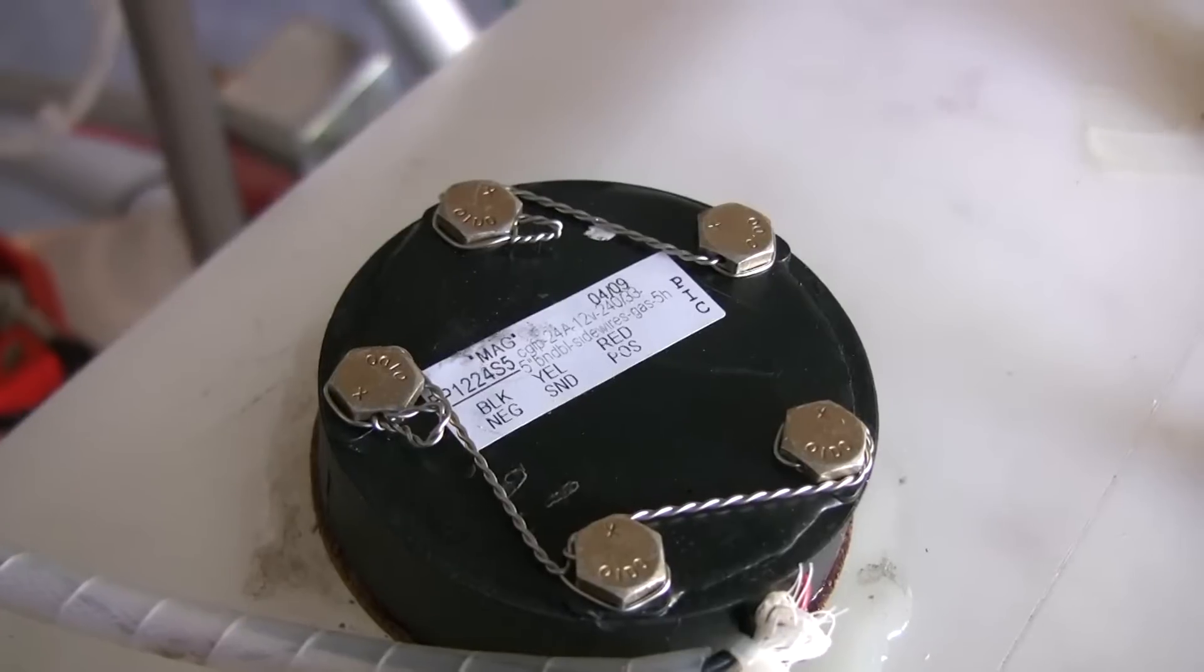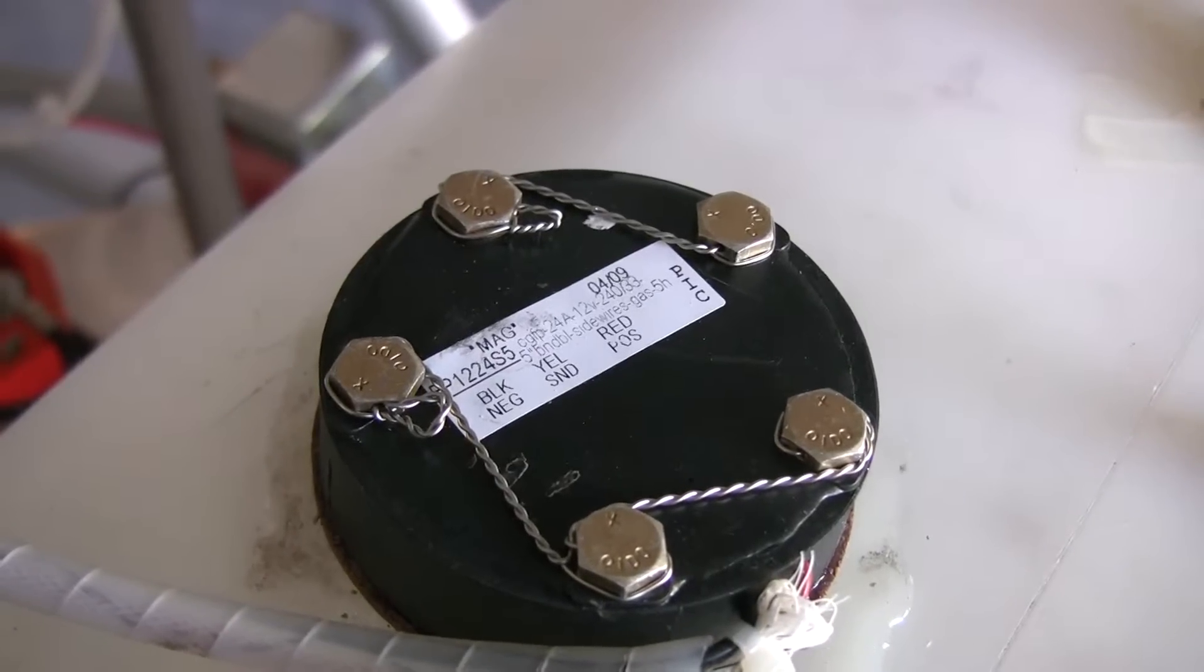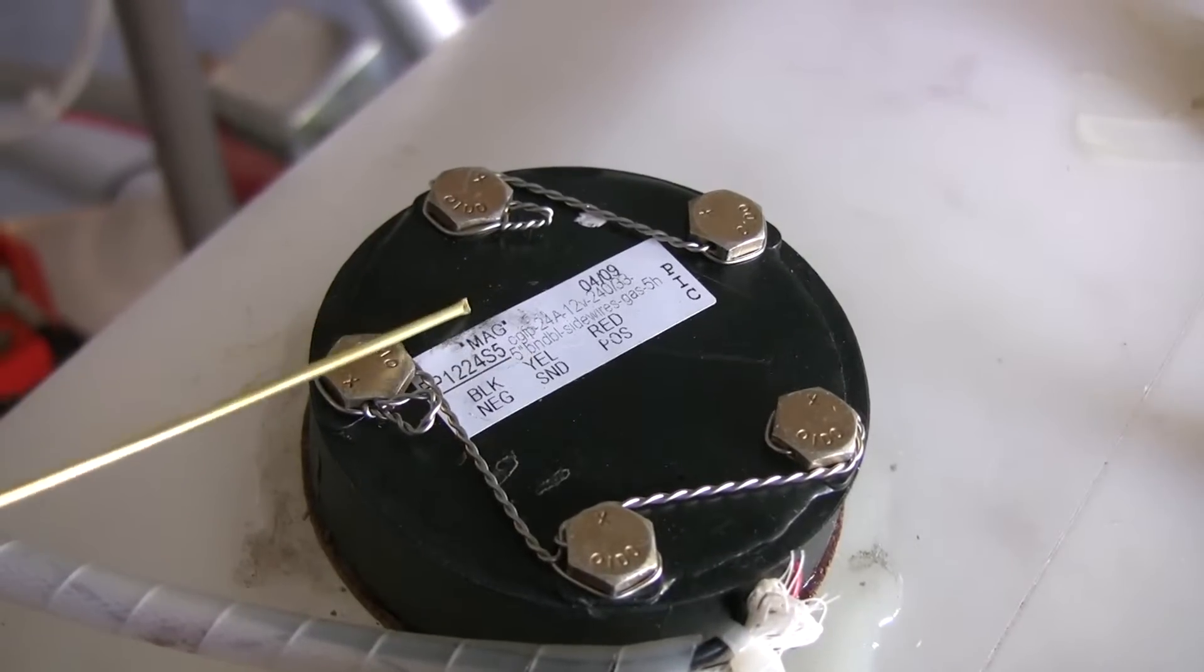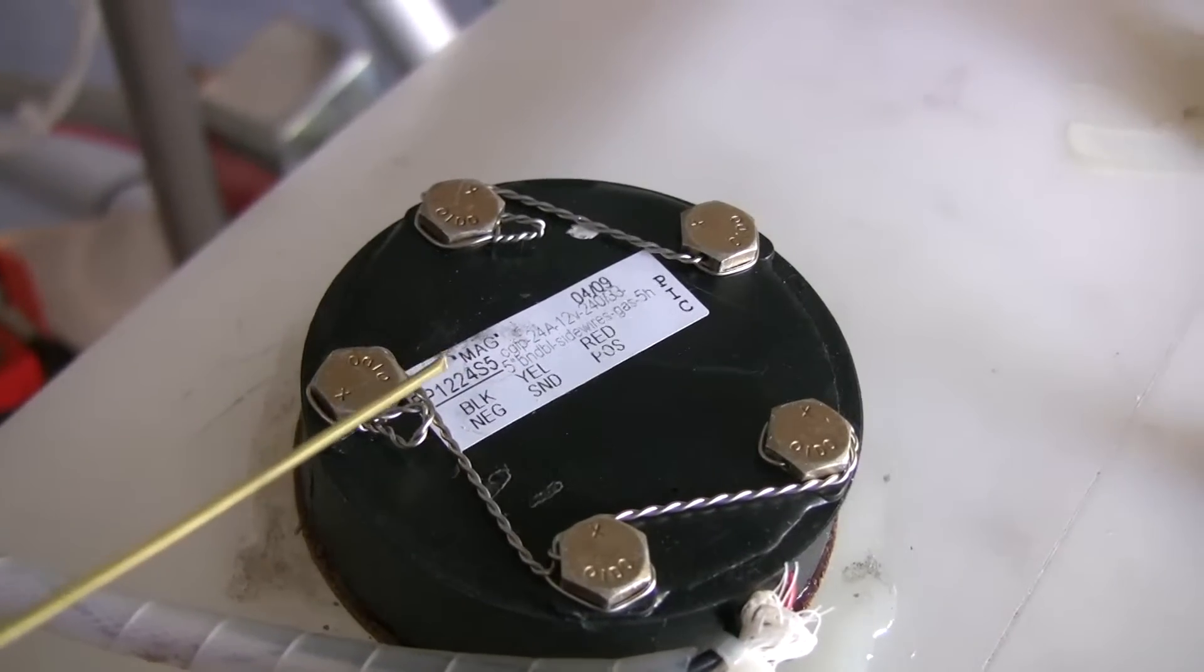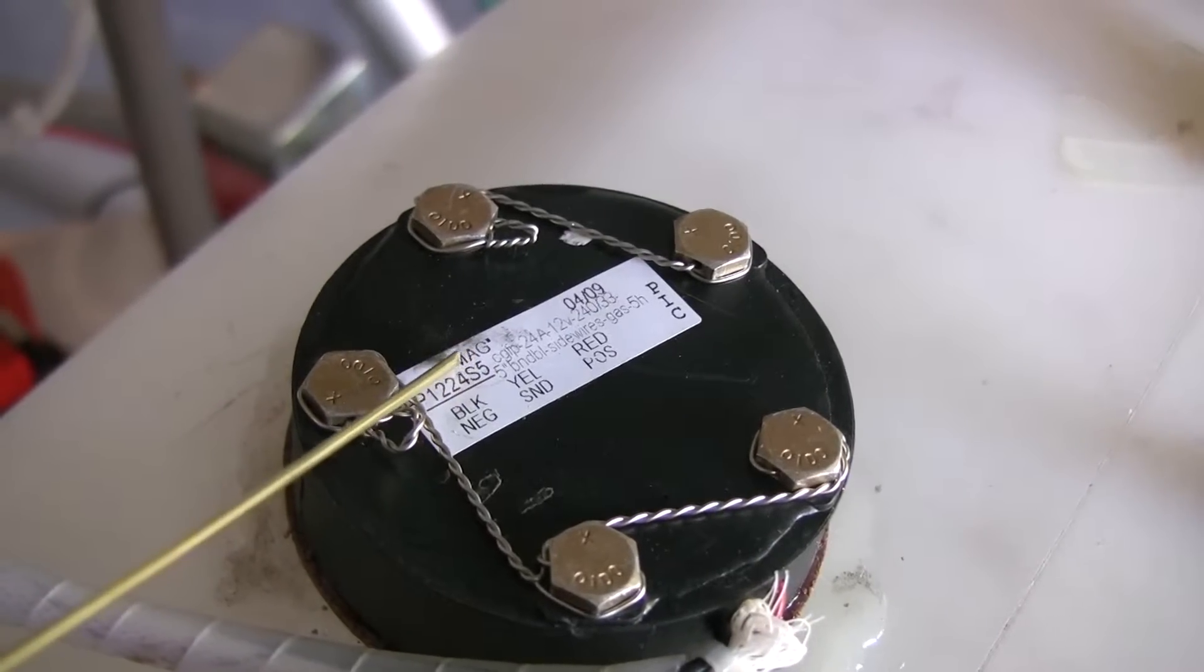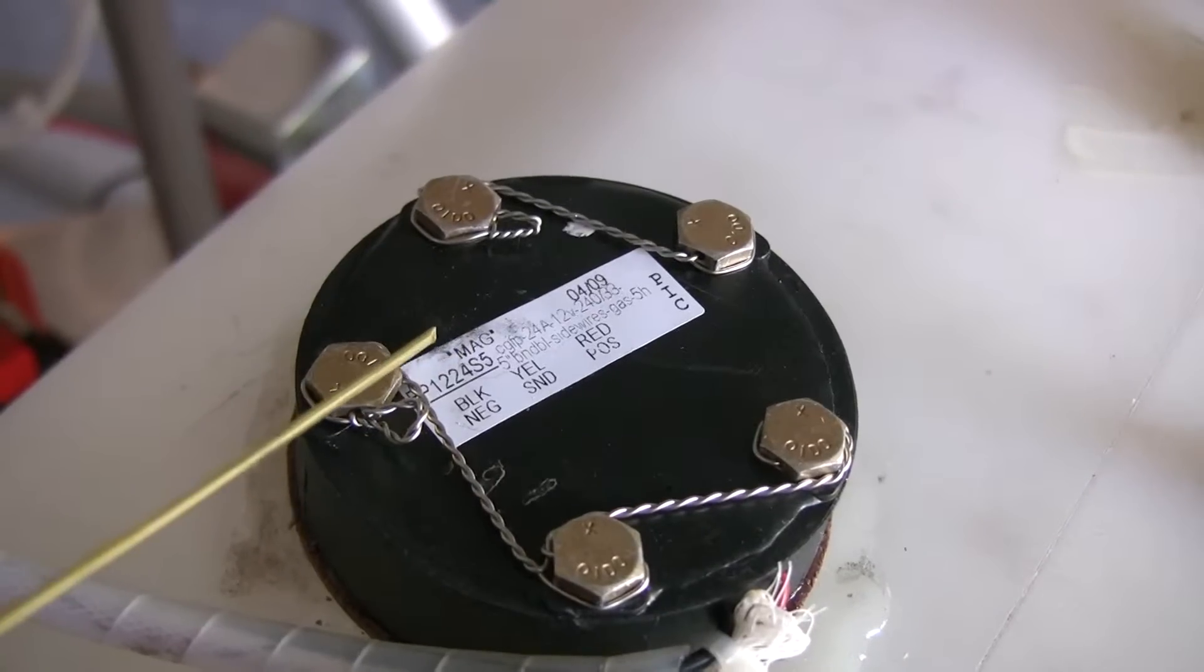When you're ready to calibrate your probe on your fuel sending unit, take a look at the top of the label and you'll see a spot marked MAG for magnet. All you need to do is take a magnet.